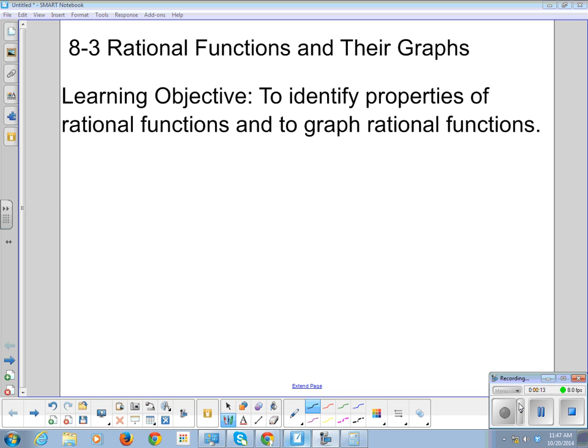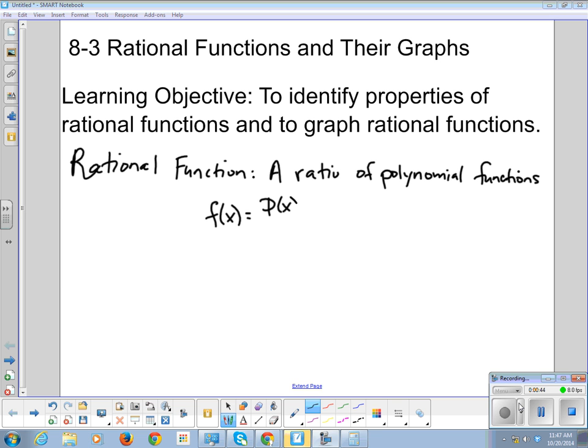So it may sound crazy, but a rational function is a ratio of polynomial functions. So it looks like f of x, a function, is equal to one rational function over the other rational function.